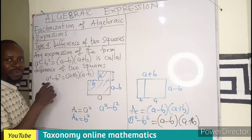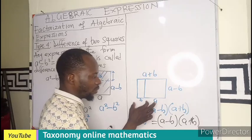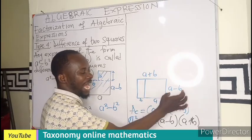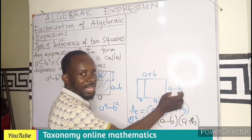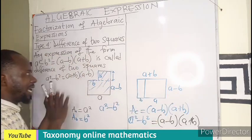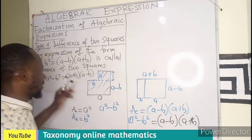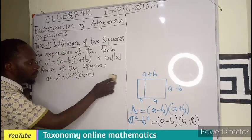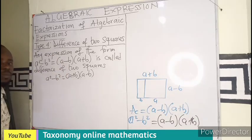The order which one comes first should not be a problem, because here I will decide to say this is my length — A plus B times this. Some will also like to take this part multiplying this part. So the order should not be a problem. This is an algebraic expression of the form difference of two squares.